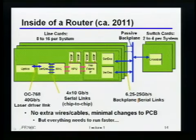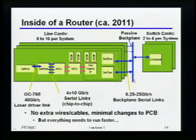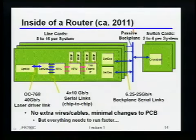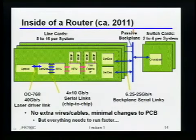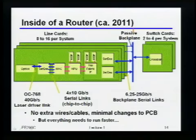Now if you look at what a backplane today might need to do — notice the cartoon hasn't changed. I haven't changed the line cards or the backplane topology. I've just taken every single one of those data rates and multiplied by four. Instead of OC192, now you may have OC768 — a 40 Gbps optical link. Instead of 3.25 Gbps links, now you need 4 by 10 Gbps. On the backplanes, you now need up to 25 or even 28 Gbps. Everything has to run faster, with no extra cables or wires.